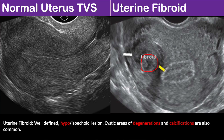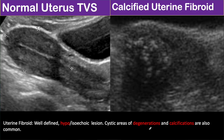Fibroid can undergo atrophy, internal hemorrhage, fibrosis, calcification, or sometimes cystic degeneration. Now look at these two transabdominal images of the uterus. Here you can see a heterogeneous lesion within the myometrium with multiple echogenic foci casting posterior acoustic shadowing. So this is a case of uterine fibroid complicated with calcification.